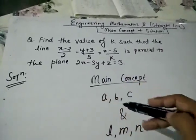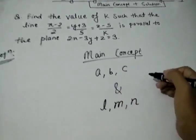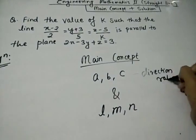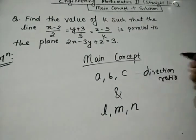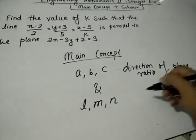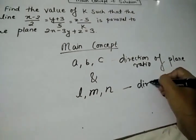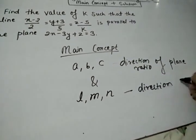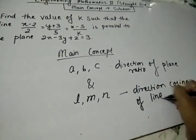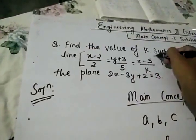We have to find ABC, that is direction ratios. Direction ratios of the plane and direction cosines of the line.